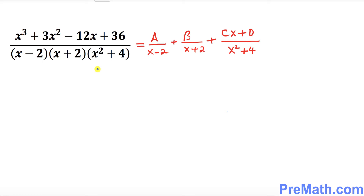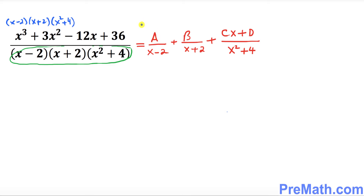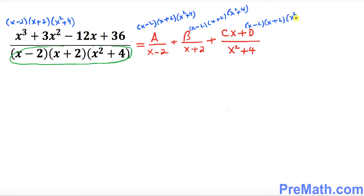The next step is to get rid of these fractions. To do that we multiply across the board by x minus 2 times x plus 2 times x squared plus 4. We do the same multiplication for every term on both sides of the equation.